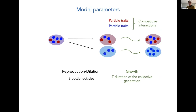What is important in this process is that there are two scales. At the scale of the collective, there is a process of reproduction or dilution, associated with the parameter of the bottleneck size — how many particles seed the new generation. There is a second parameter at the collective scale: how long particles grow within a collective, which is big T, the duration of the collective generation. But inside each collective, the particles undergo an ecological interaction ruled by particle-level traits. These traits can differ between blue and red particles, and for simplicity we start with competitive interactions.